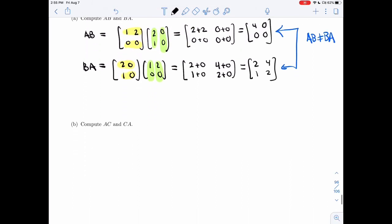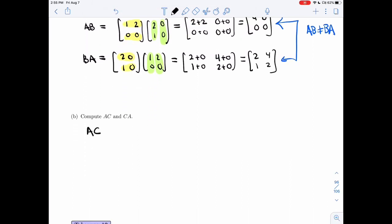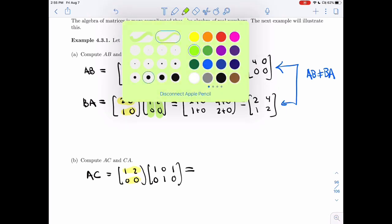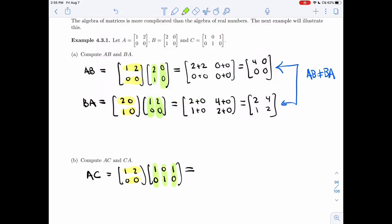Alright, let's try AC and CA. If I do AC, I'm sorry, I can't see it anymore. That's going to be 1, 2, 0, 0, 0 times 1, 0, 1, 0, 1, 0. Again, I'm going to take the rows of A, the columns of C. I'm going to get 1, I'm going to get 2, 1, and then 0, 0, 0.